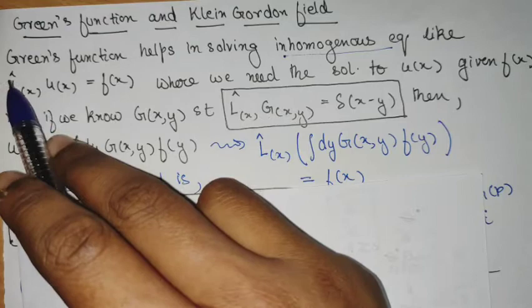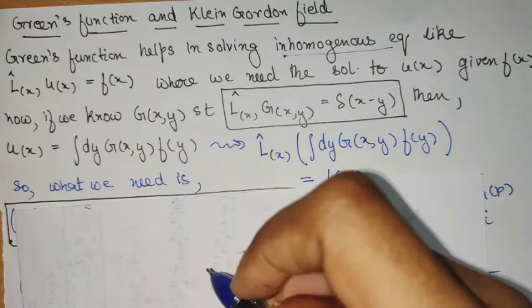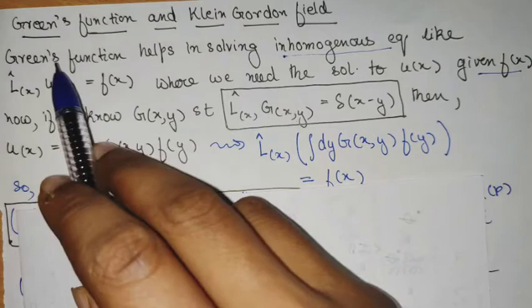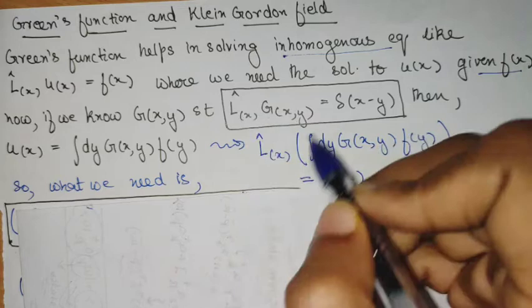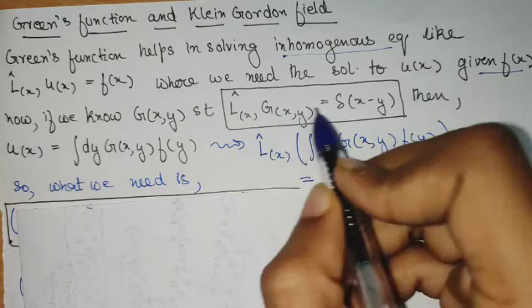Green's function helps us in solving inhomogeneous equations involving a differential operator L(x). We are interested in solving for U(x) such that f(x) is a known function. To get this final result, we aim at solving a particular configuration — which kind of function G(x, y) will solve this particular delta function equation.